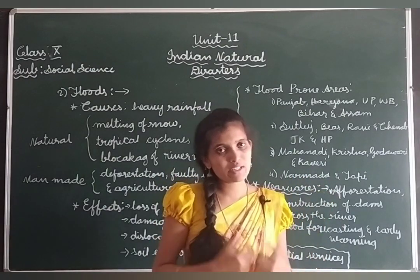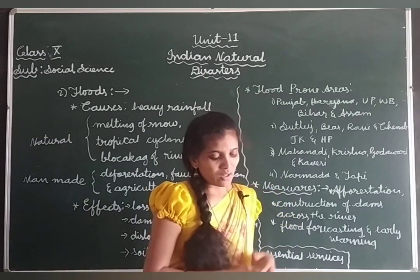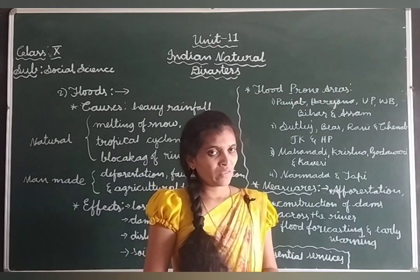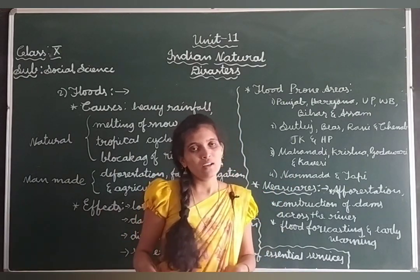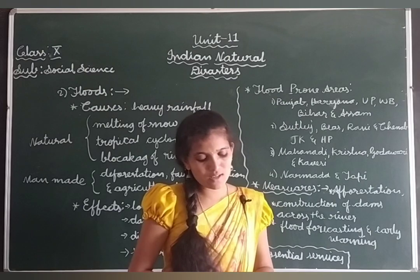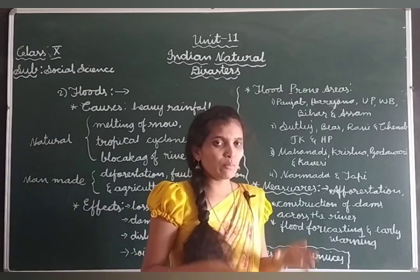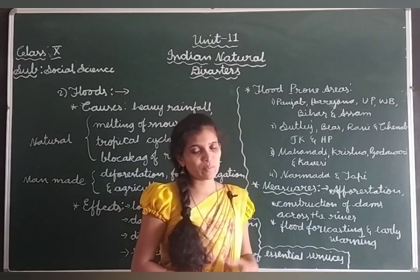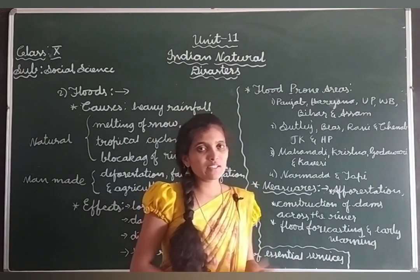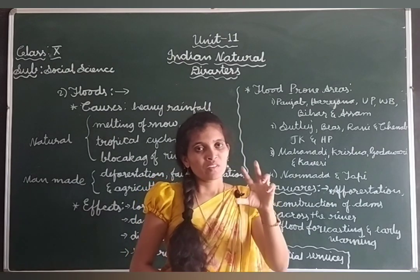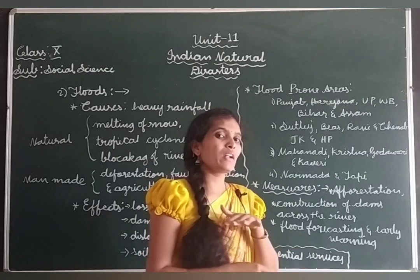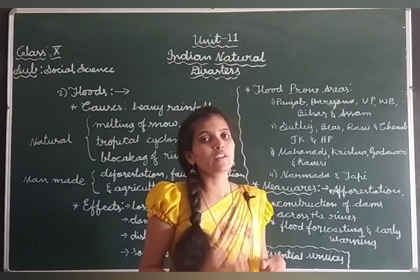In the north-western part of India, especially the Gujarat region, floods are seen along the rivers Narmada and Tapi. So this is the distribution of flood-affected areas in India. Next, what measures should we take to control floods?